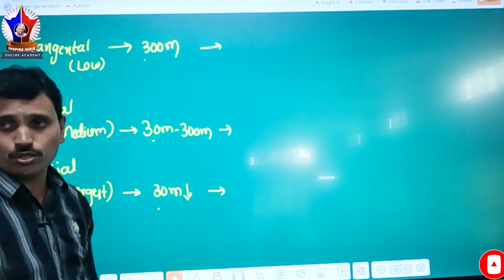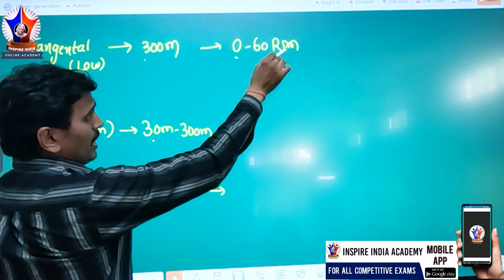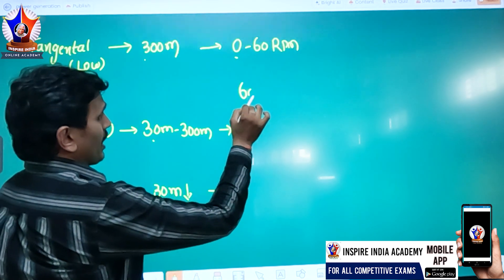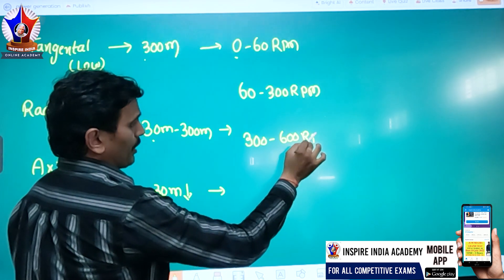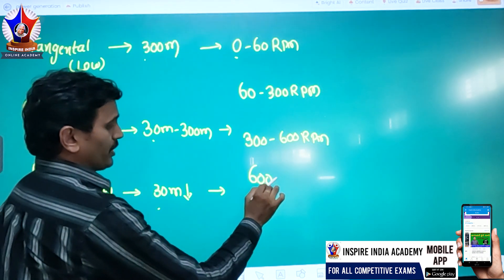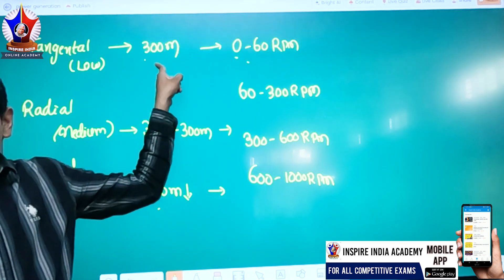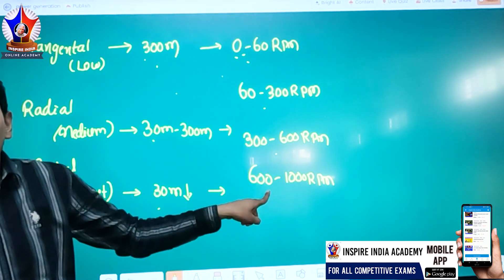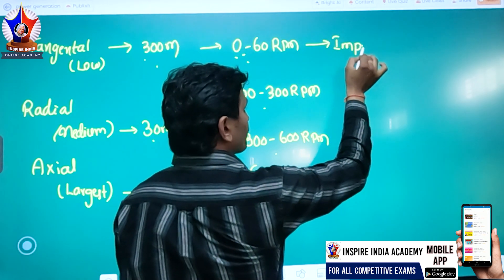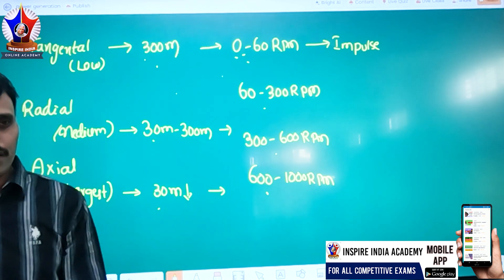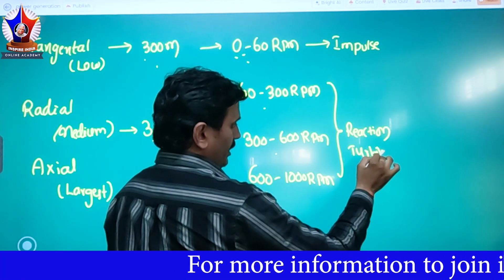We can get 0 to 60 RPM speed. When we get 60 RPM speed, we can get a 300 RPM speed. There is speed and height — 3 to 4 degrees. In this 4-degree range, we use the impulse turbine. For higher ranges, we use the reaction turbine.